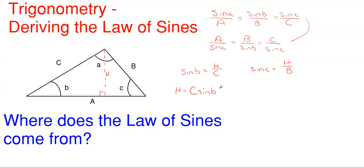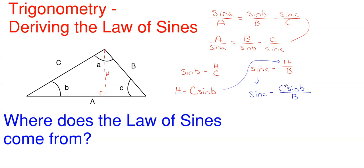So the height H is equal to side C times the sine of angle B. We are going to take this and plug it in for H in the sine of angle C equation. When we plug it in, we get sine of angle C is equal to C times sine of B, all over side B. Now we can move side C to correlate with sine of angle C, and what we have is sine of C over side C is equal to sine of angle B over side B. That's looking pretty familiar!